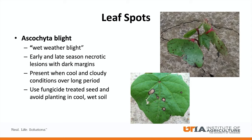Ascochyta blight, commonly referred to as wet weather blight, is a foliar pathogen in cotton that is present mostly in early season, but it can be found late season if the environment is conducive. Lesions are normally light brown with dark red to purple margins. Wet weather blight is present when cool and cloudy conditions persist over a number of days. To prevent early season wet weather blight, use a fungicide-treated seed and avoid planting in cool, wet soil and weather.